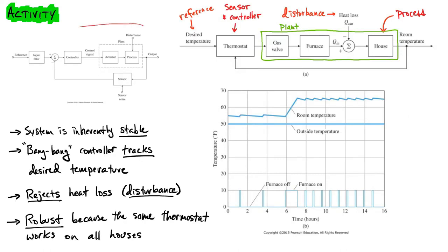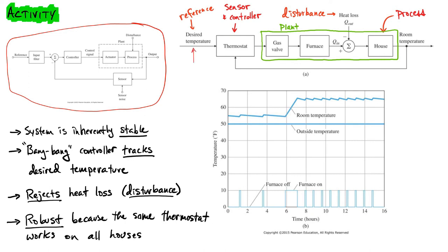I've made a copy of the block diagram from the previous slide and now we're going to customize it for our particular case. The reference is our desired temperature — that's what we'd like our temperature to be. The thermostat is not only the controller but also the sensor — it monitors the temperature inside the house and turns the furnace on or off. There could be a more advanced system with temperature sensors throughout the house communicating back to a central thermostat, but for the most part we all have sensor and controller combos in our thermostat.